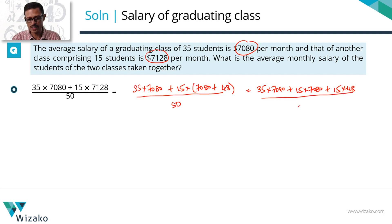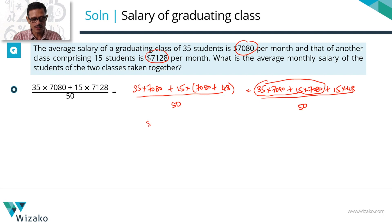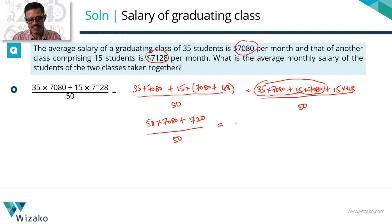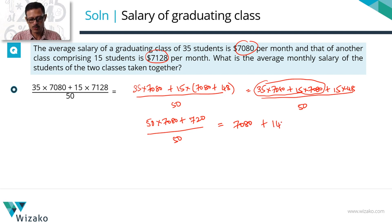This numerator divided by 50 is what we need. Adding the first two terms: 35 × 7080 plus 15 × 7080 gives us 50 × 7080. And 15 × 48 is an easy calculation — that works out to 720. So the entire expression divided by 50 can be broken as: 50 × 7080 / 50 plus 720 / 50. This equals 7080 plus 14.4 — since 700/50 = 14 and 20/50 = 0.4 — giving a final answer of 7094.4.